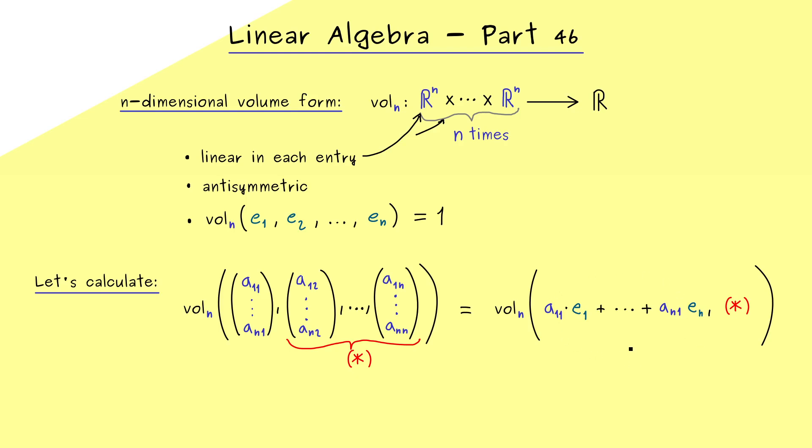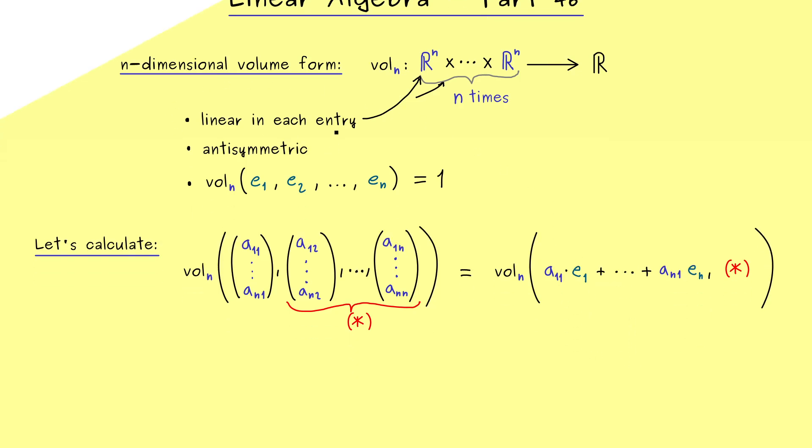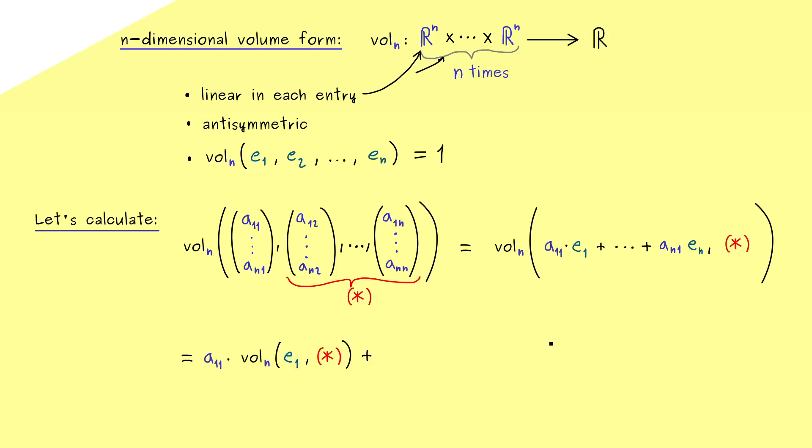Therefore, now we are able to use the linearity in the first entry. This means, we can pull out the addition sign and the scalar multiplication. And of course we do that for the whole linear combination and this is the result. And here please note, still the first index for A has to correspond to the index in E.